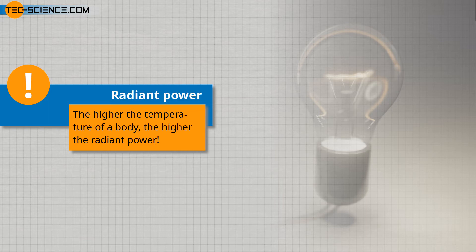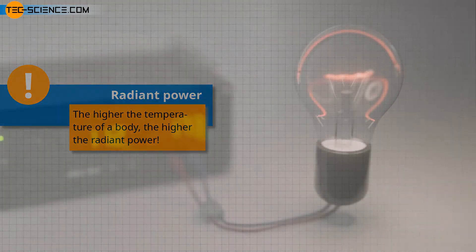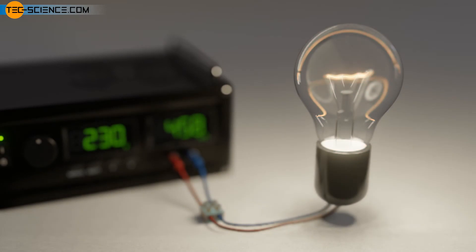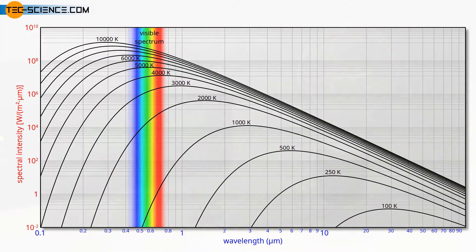Note that the fact that the filament is weakly reddish at low temperature and bright yellow at high temperature is due to the wavelength spectrum emitted, which shifts to the yellowish range with increasing temperature. For more information, see the video on blackbody radiation.